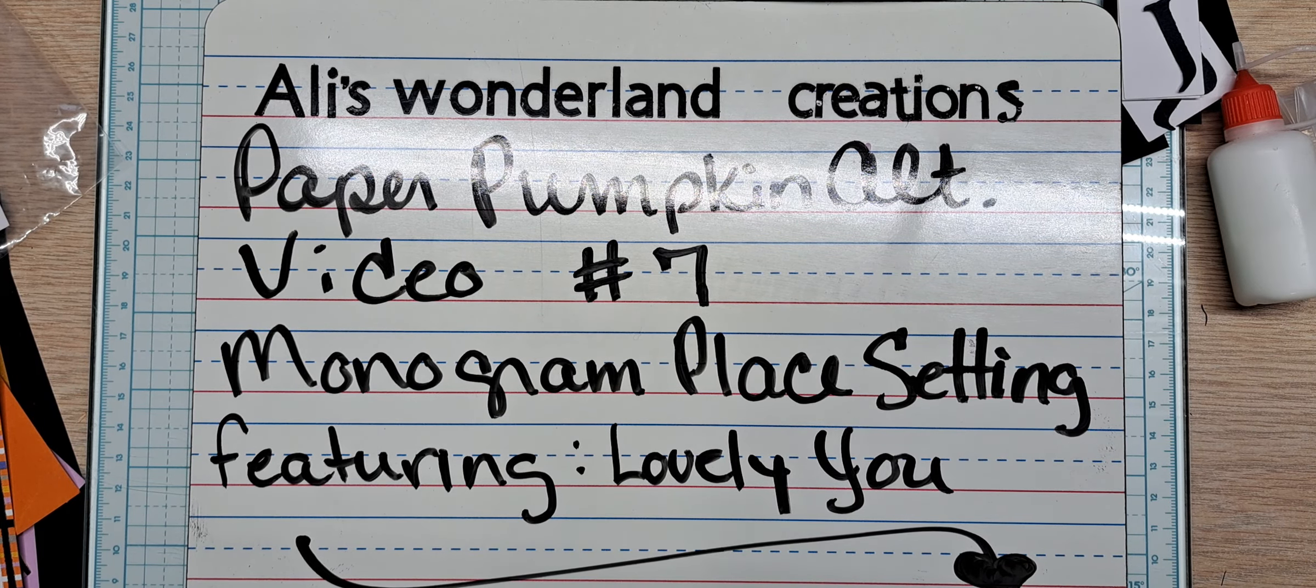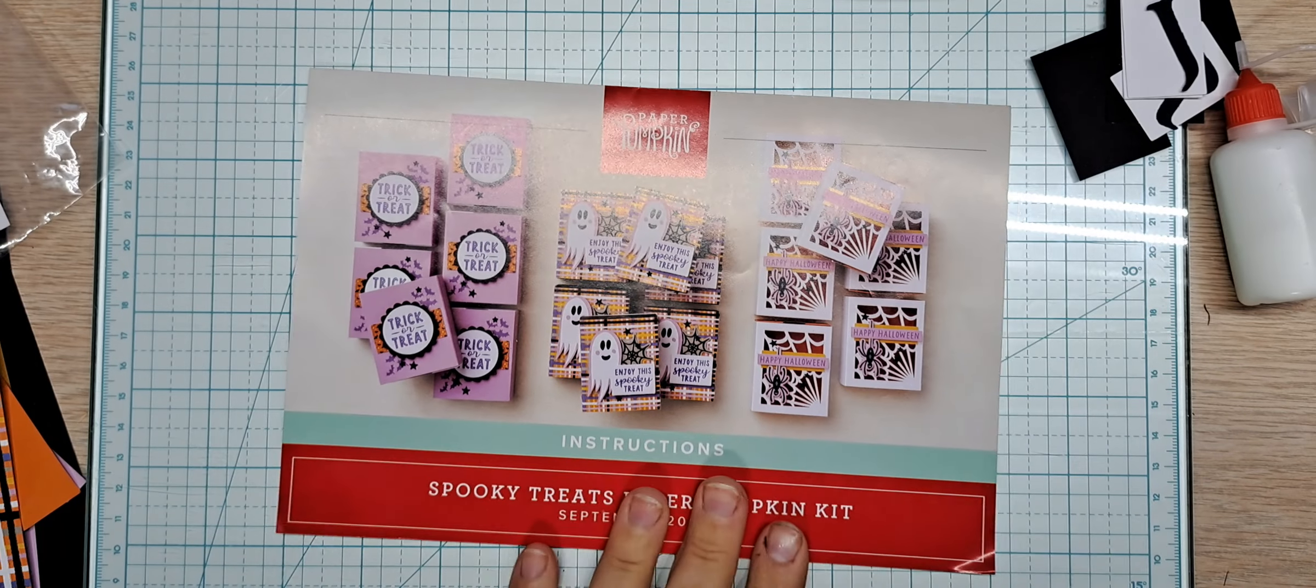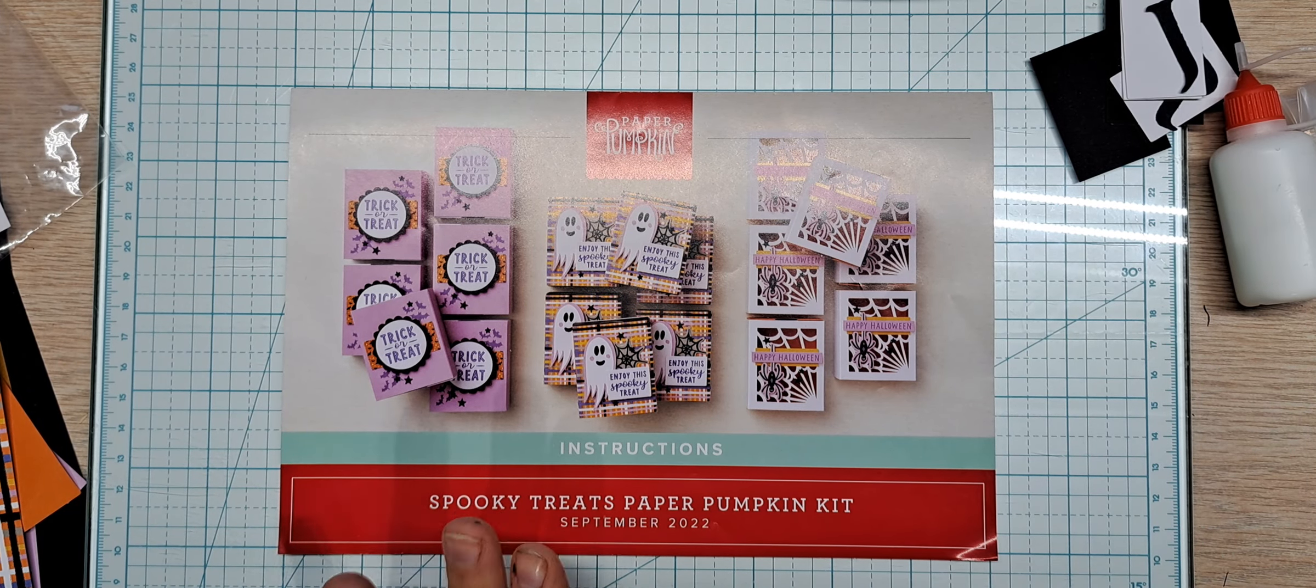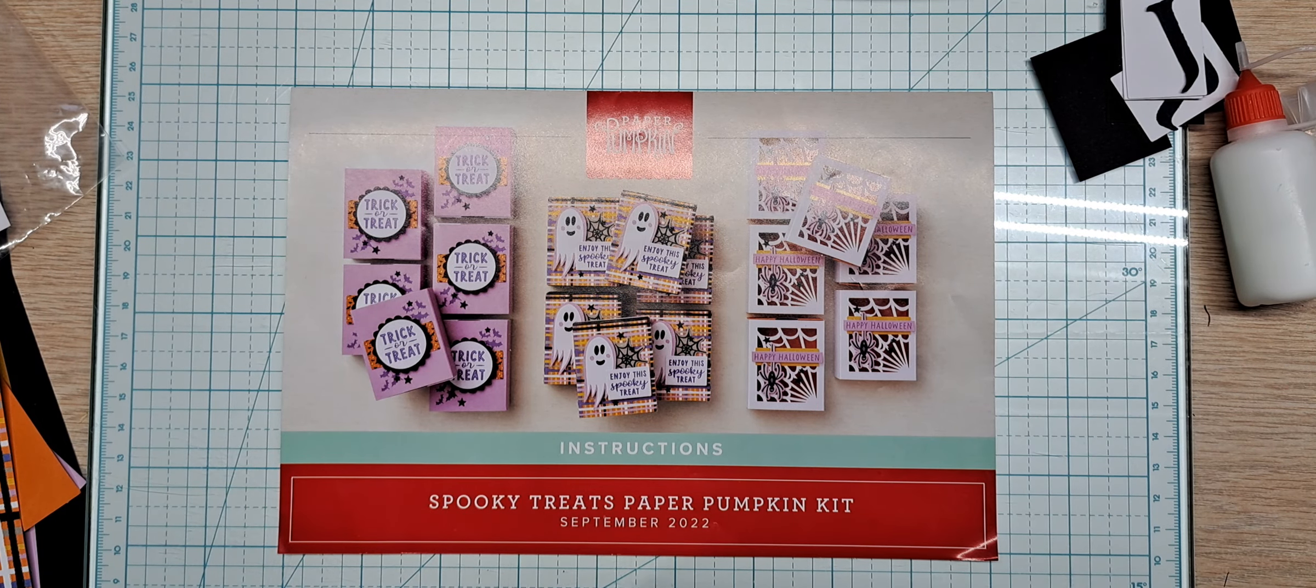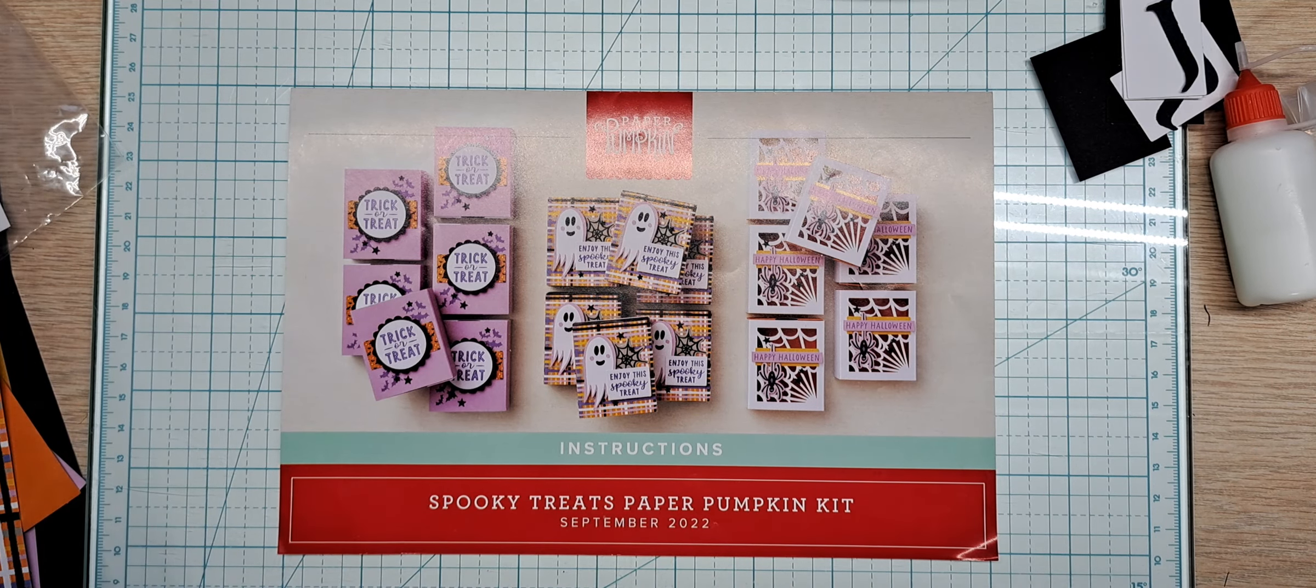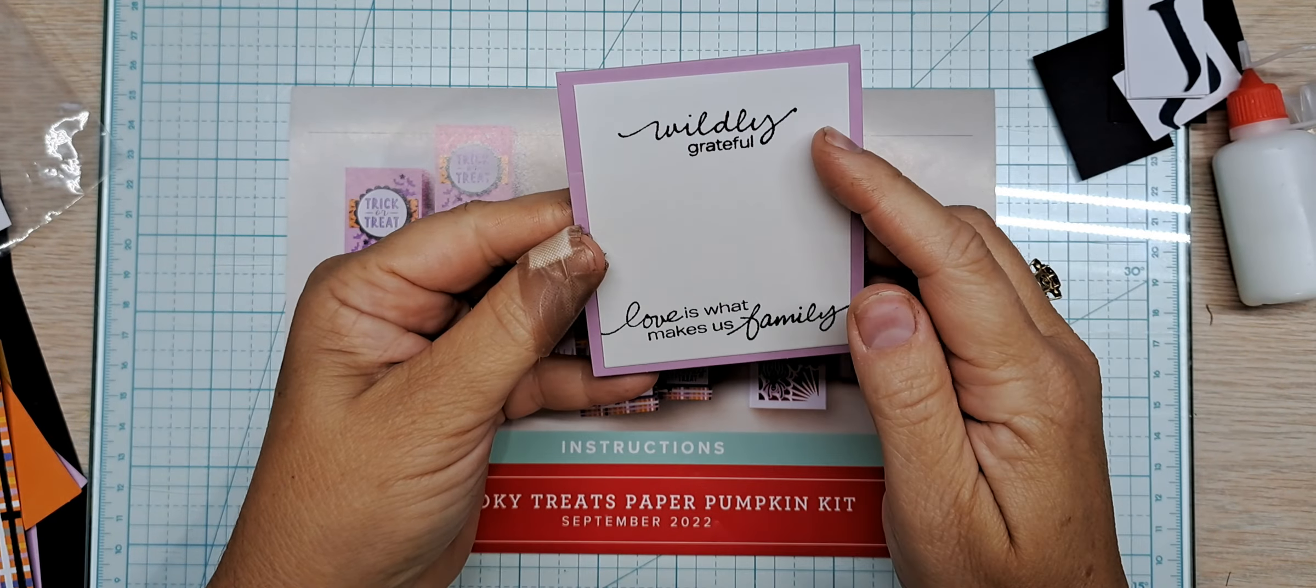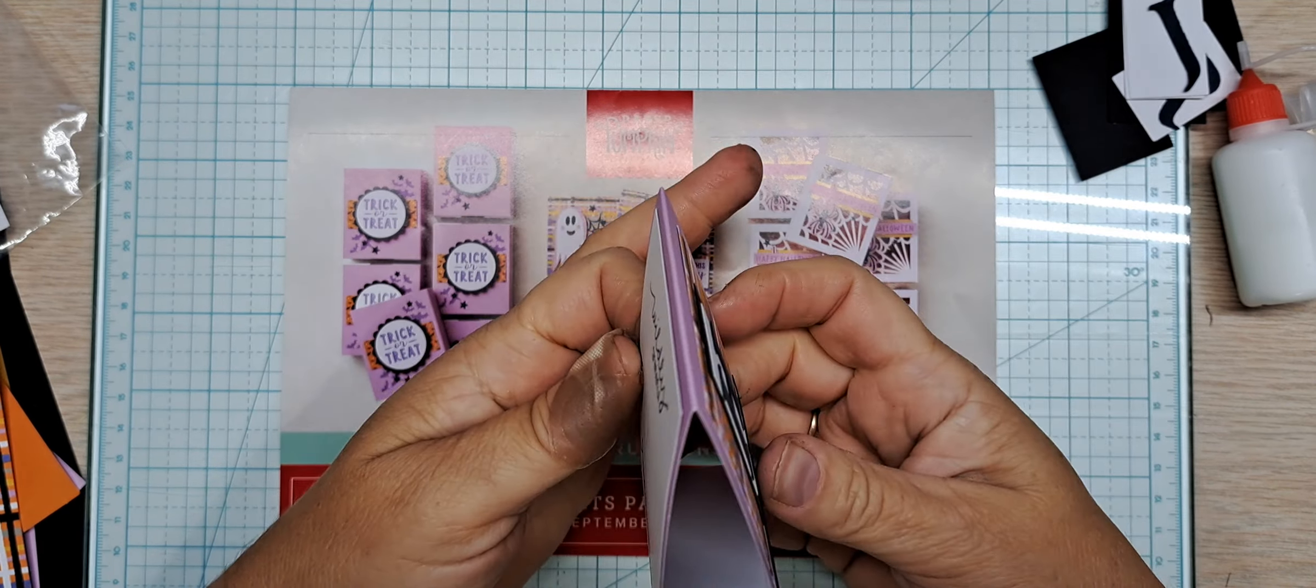I'm doing a monogram place setting that I'll be using for Thanksgiving, basically. So featuring the Lovely You Stamp Set. This was the kit and I haven't done any one. I tend to change it up. You can already see what's in the kit and do them like the kit if you so choose. Me, I choose to try to do something different. So I'm going to show you my little project here. It's a cute little monogram place setting. Wildly grateful. Love is what makes us family.